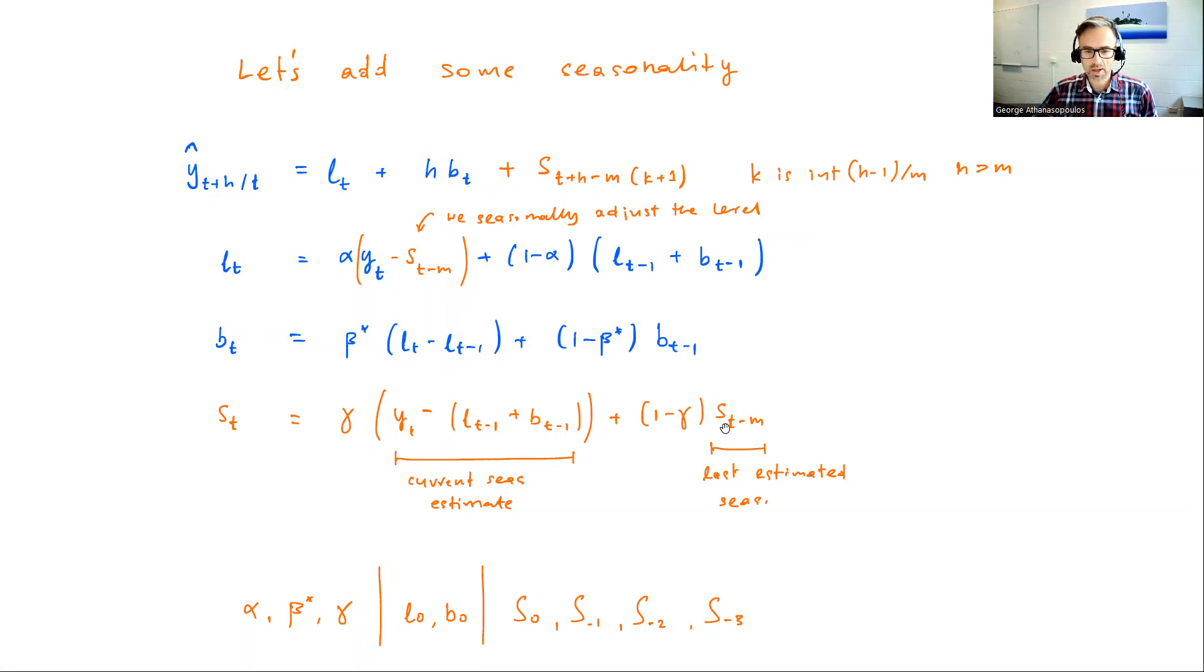So T minus M. Now we have the parameters we need to estimate for this method. Now are the three smoothing coefficients, the two that we had before alpha and beta star. Now we have a gamma, which is a smoothing coefficient for the seasonal component. And we also have initial state for level and trend. But now we have, because we have, with quarterly data, we have four seasonal indices. We need to start these somewhere.